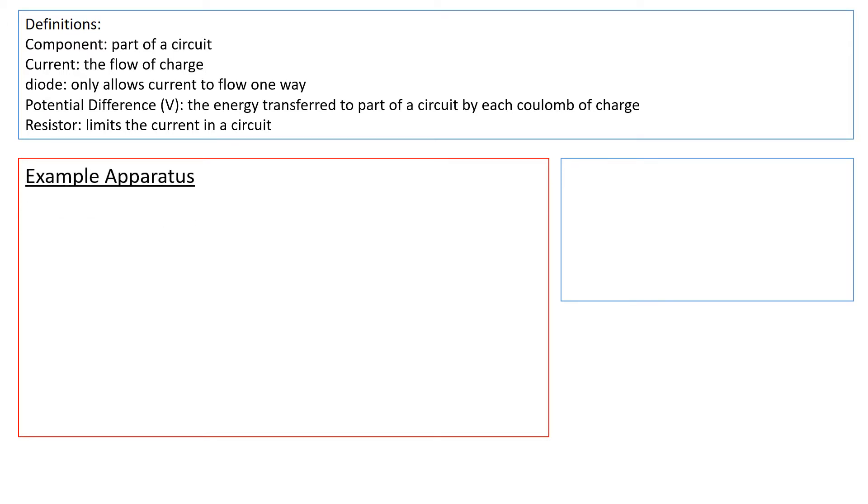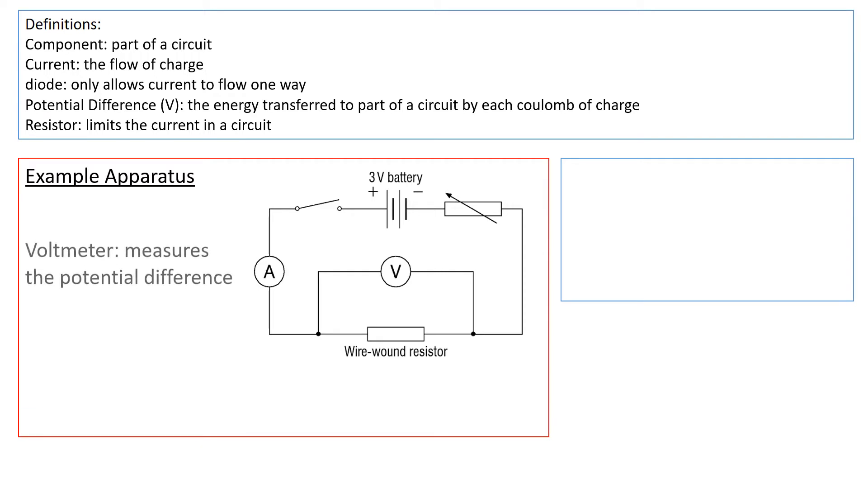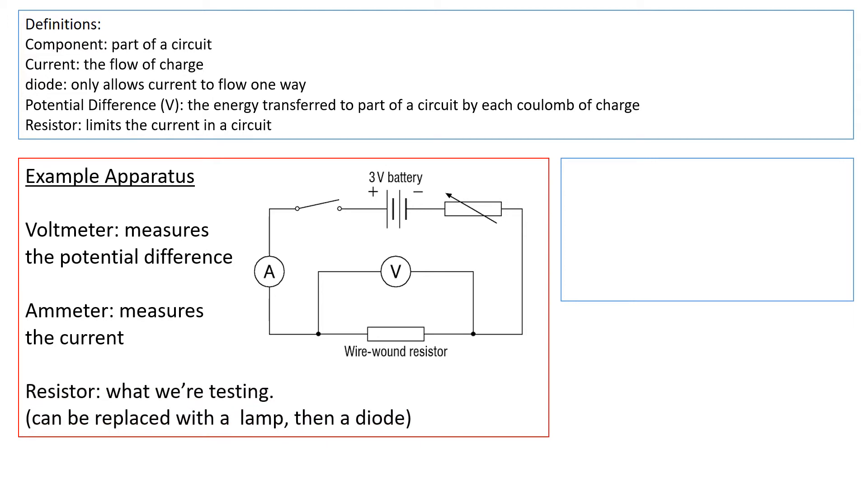Some example apparatus that you need to be aware of - this is my circuit. Notice that I have used straight lines, which would imply a ruler. In the absence of a ruler, use the side of your phone. The voltmeter measures the potential difference, the ammeter measures the current, and the resistor can be replaced with a lamp or a diode.